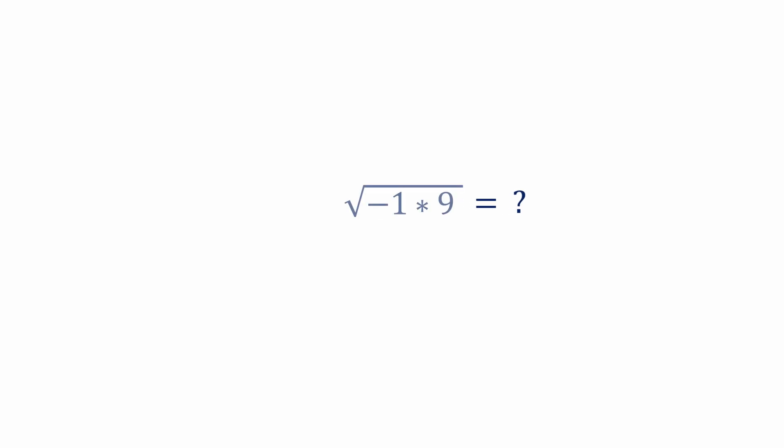The rules of algebra allow us to express this as the square root of minus one times the square root of positive nine, which is the square root of minus one times three. But we're still faced with the unanswerable question. What is the square root of minus one? What number, when multiplied by itself, gives us minus one?